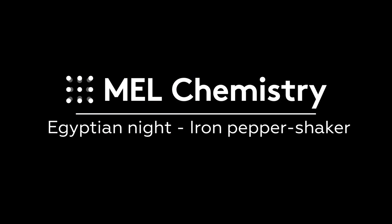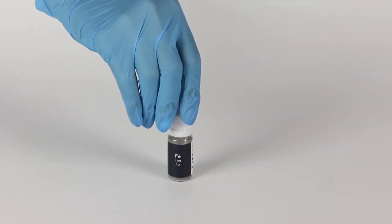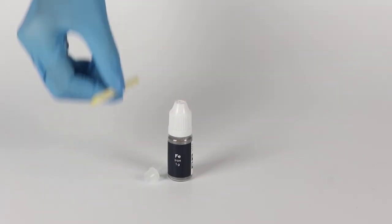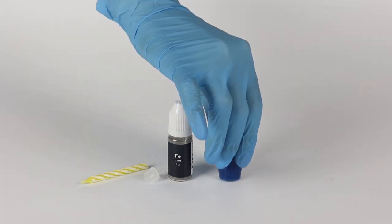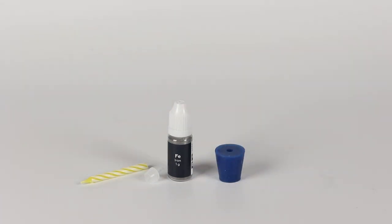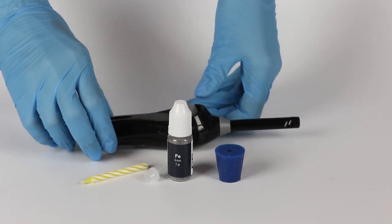For the iron pepper shaker experiment, you will need a bottle of iron powder. Take a plastic tip and a candle from the experiment set. Take the rubber stopper with a hole from the starter kit. Also, prepare matches or a lighter in advance.